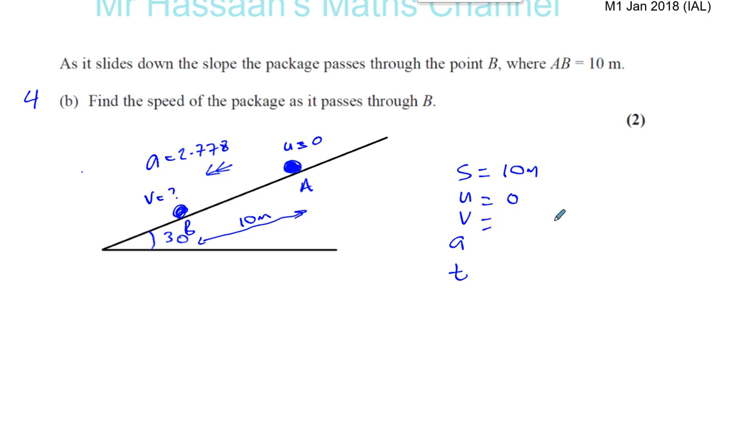So we know that it's released from rest, so u is zero. We have to find v. The acceleration we're told is 2.778, this is the higher degree of accuracy than we wrote. And the time we don't know, so we don't need to find the time. So we need to deal with s, u, v, and a.